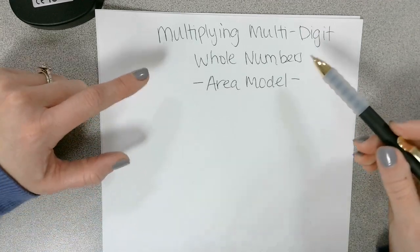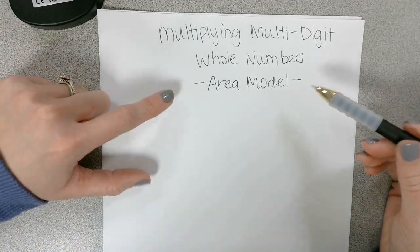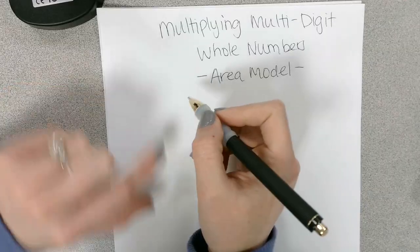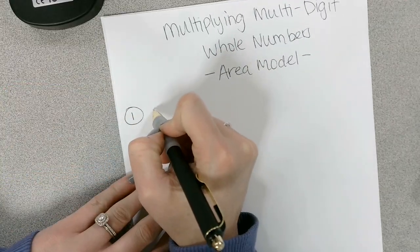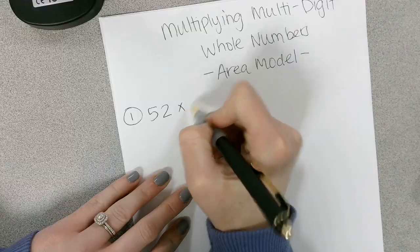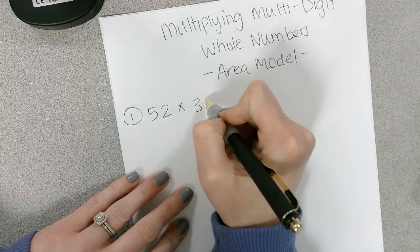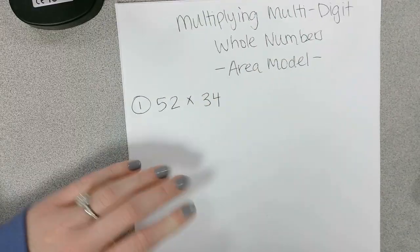All right, so we are going to practice multiplying multi-digit whole numbers using the area model. So I'm going to do two examples. Number one, let's just try 52 times 34, okay?